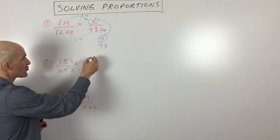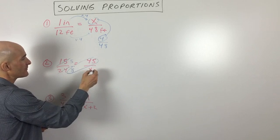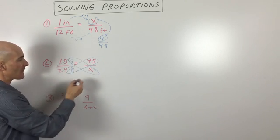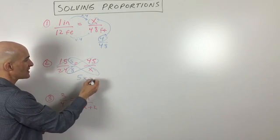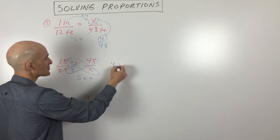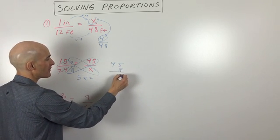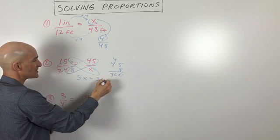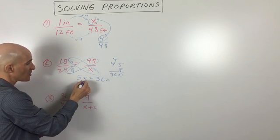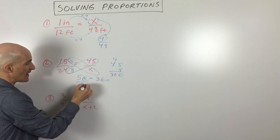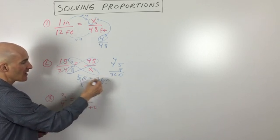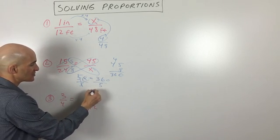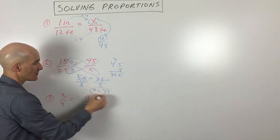So now what we're going to do is just cross multiply. So we have 8 times 45 equals 5x. So 5 times x equals 8 times 45. Let's see what's 8 times 45. That's 360. And then what we're going to do is solve for x by dividing by 5, and so now we get 72.